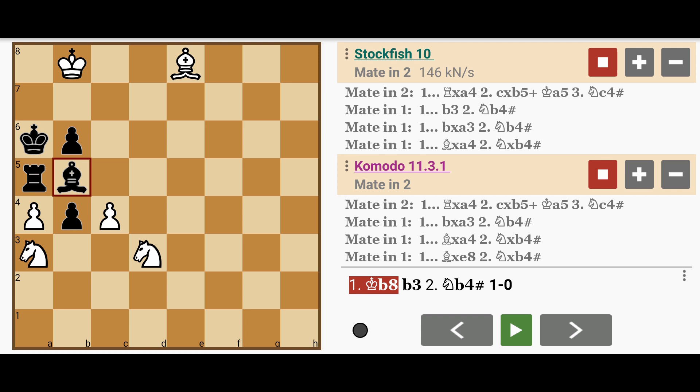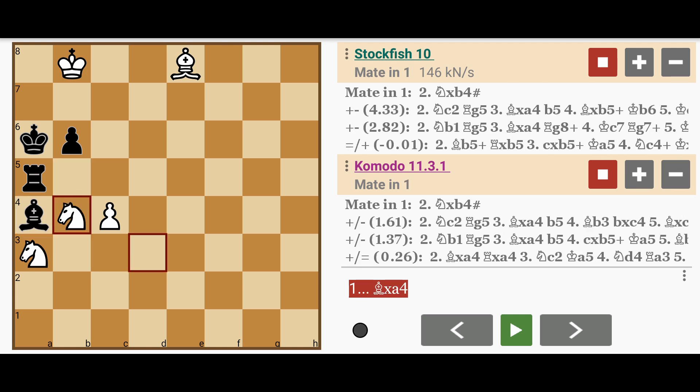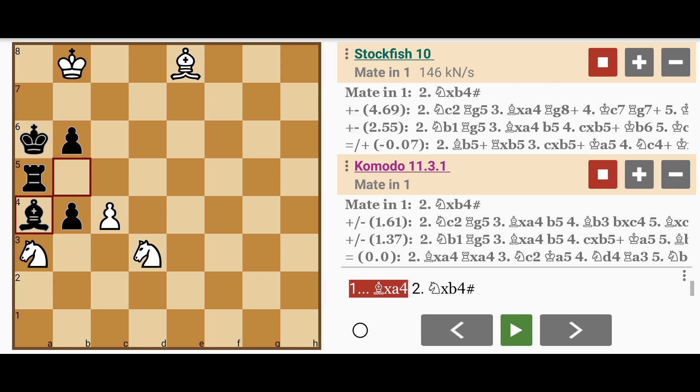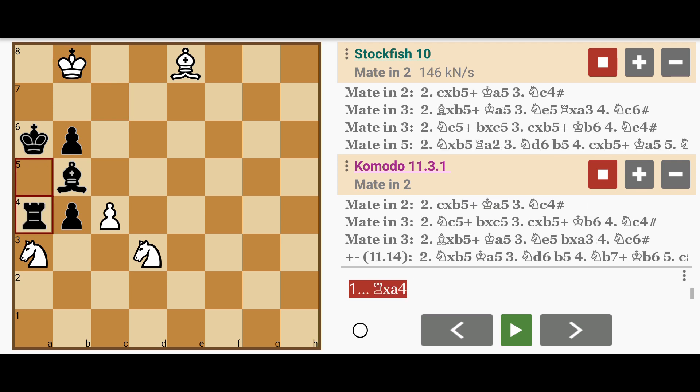But what if black tried something else like Bishop captures a4? Again, it's Knight to b4. So how do you prevent Knight captures b4 or Knight moving to the b4 square? You do that by playing Rook captures a4.